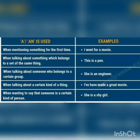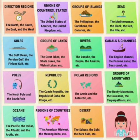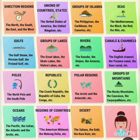Now we are going to elaborate about the definite article 'the'. This article is used before the names of directions, unions of countries, states, groups of islands, names of seas, rivers, lakes, polar regions, republics, and poles.